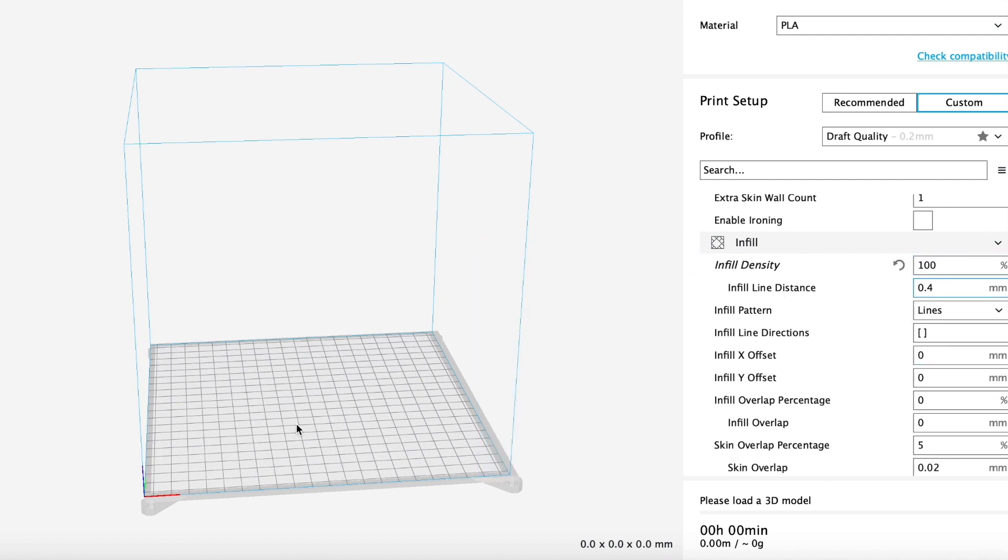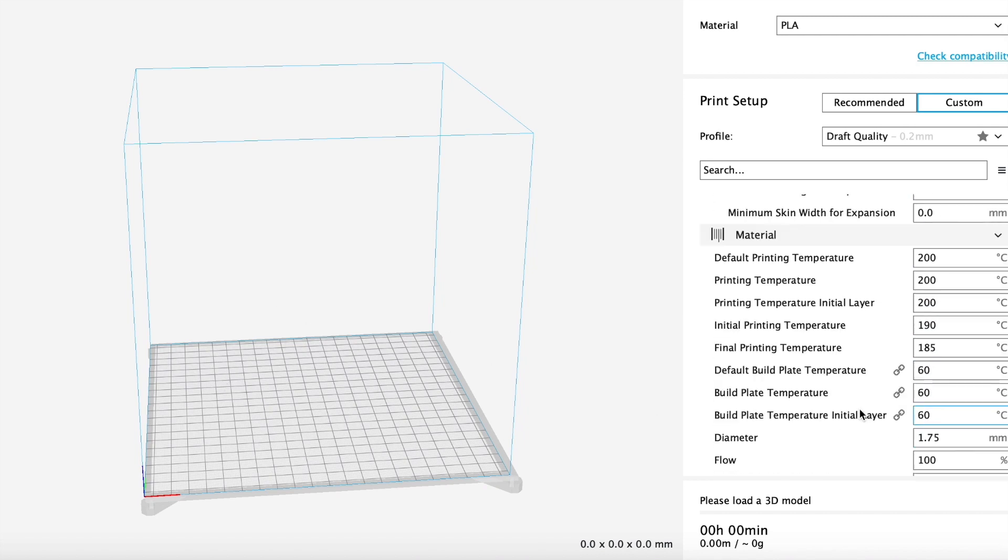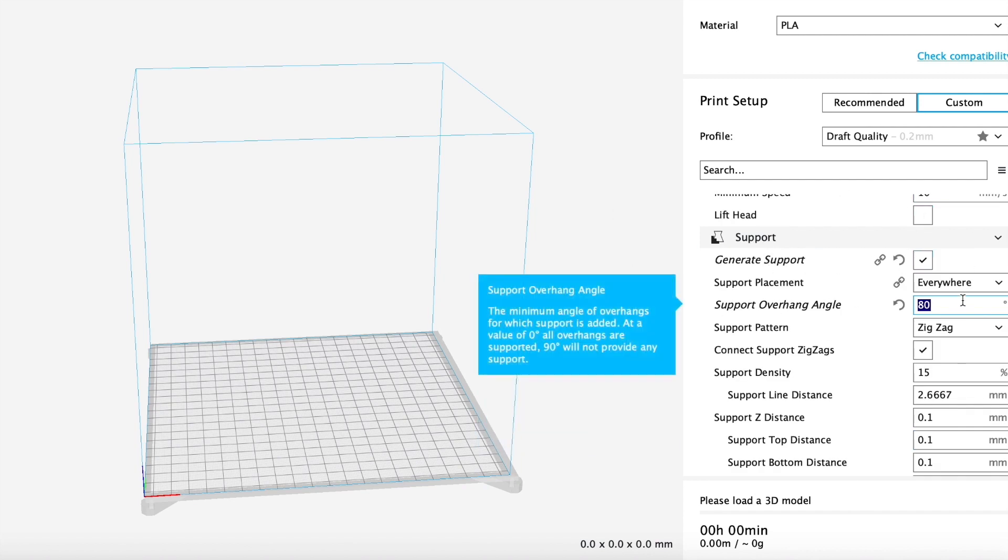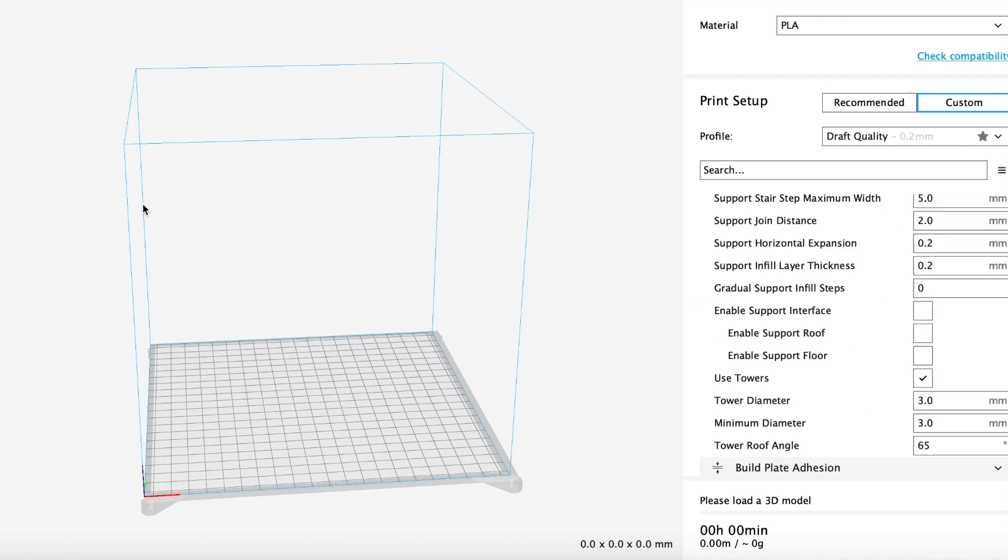In addition to that, I do recommend using 100% infill for everything, and that is due to the fact that parts are going to be under a lot of force due to the spring being compressed when the cartridge is loaded. Temperature for me should be good for around 200 degrees Celsius. For support material, that definitely needs to be on and the support overhang angle I like to set it at 80 degrees.